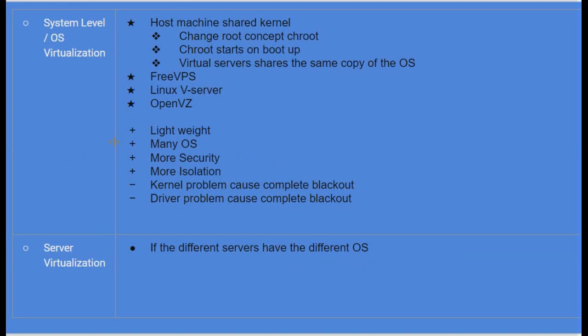Operating system-level virtualization uses a shared kernel on the host machine. This is possible using the chroot concept — chroot starts on boot up and virtual servers share the same copy of the operating system. Examples are FreeVPS, Linux VServer, and OpenVZ. Plus points: it is lightweight, supports many operating systems, and provides more security and isolation. Minus points: a kernel problem or driver problem can cause a complete blackout.